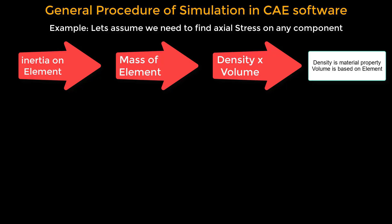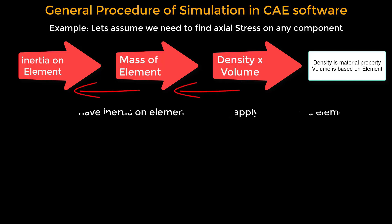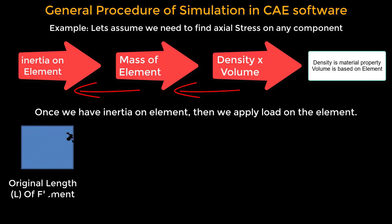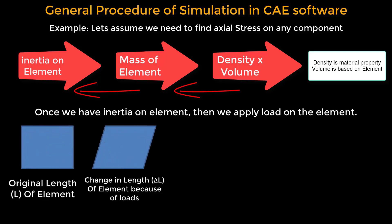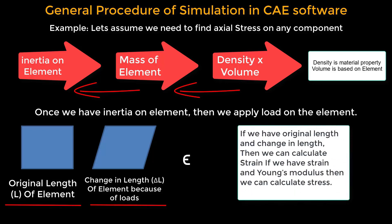The volume of an element is a measure of the space it occupies, determined by the element's geometry, which the software calculates based on the design of the component. Once we have the density and volume, we multiply these two to calculate the mass of the element. With the mass determined, we simulate the application of a load on the element. This load causes deformation, changing the element's length. We measure the original length L and the change in length delta L due to the load. Understanding the deformation leads us to calculate strain, which is the ratio of change in length to original length.